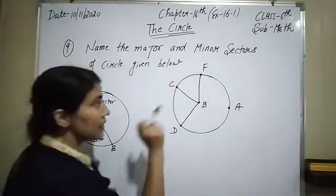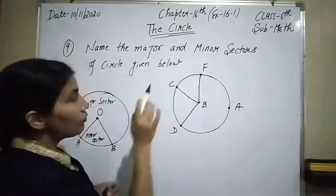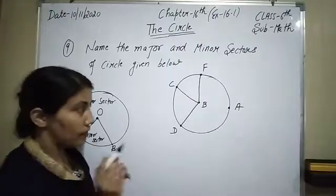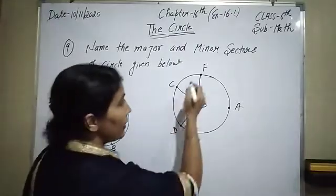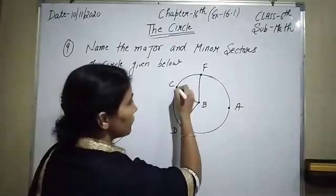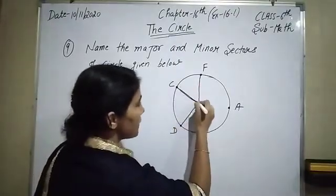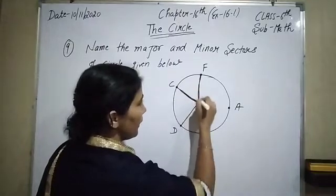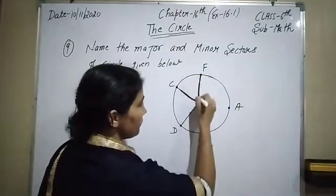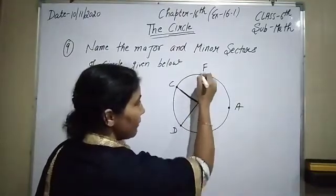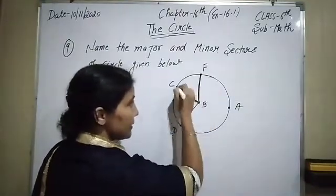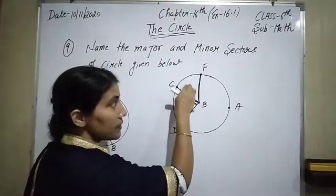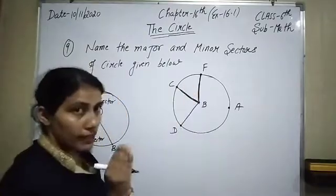Now look at this figure — we have to write down the minor and the major sectors. Here is the first sector, here are the two radii. BF and BC are the radii, and this one is called our minor sector.